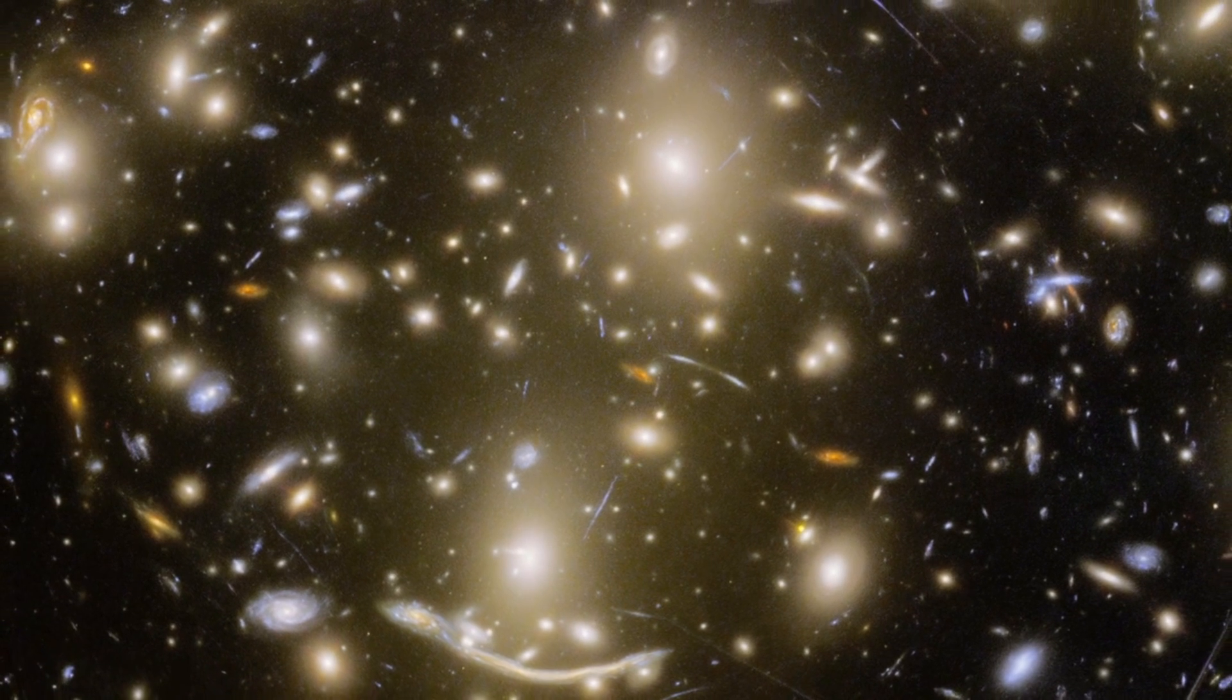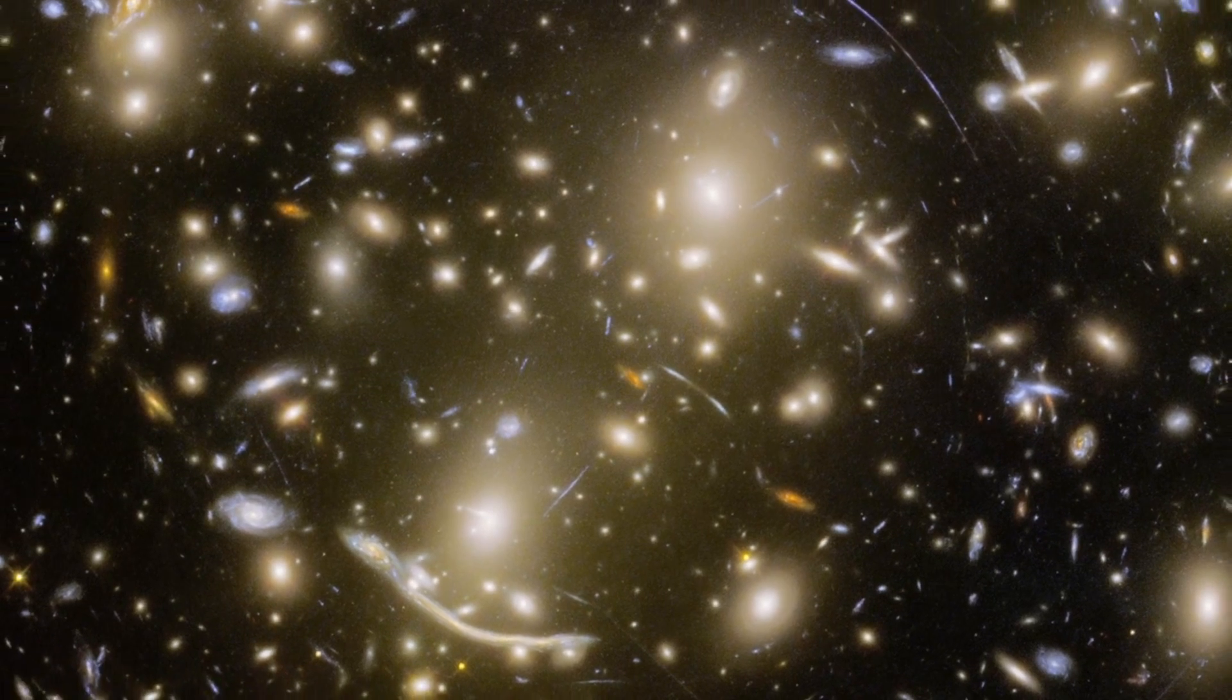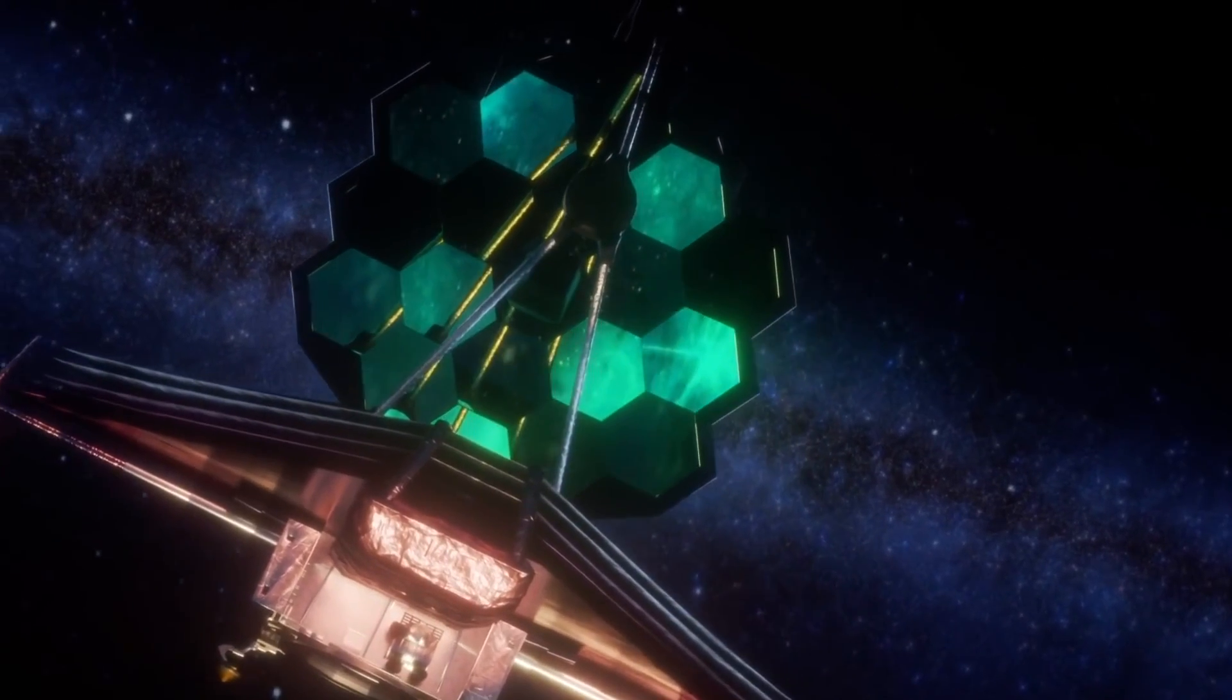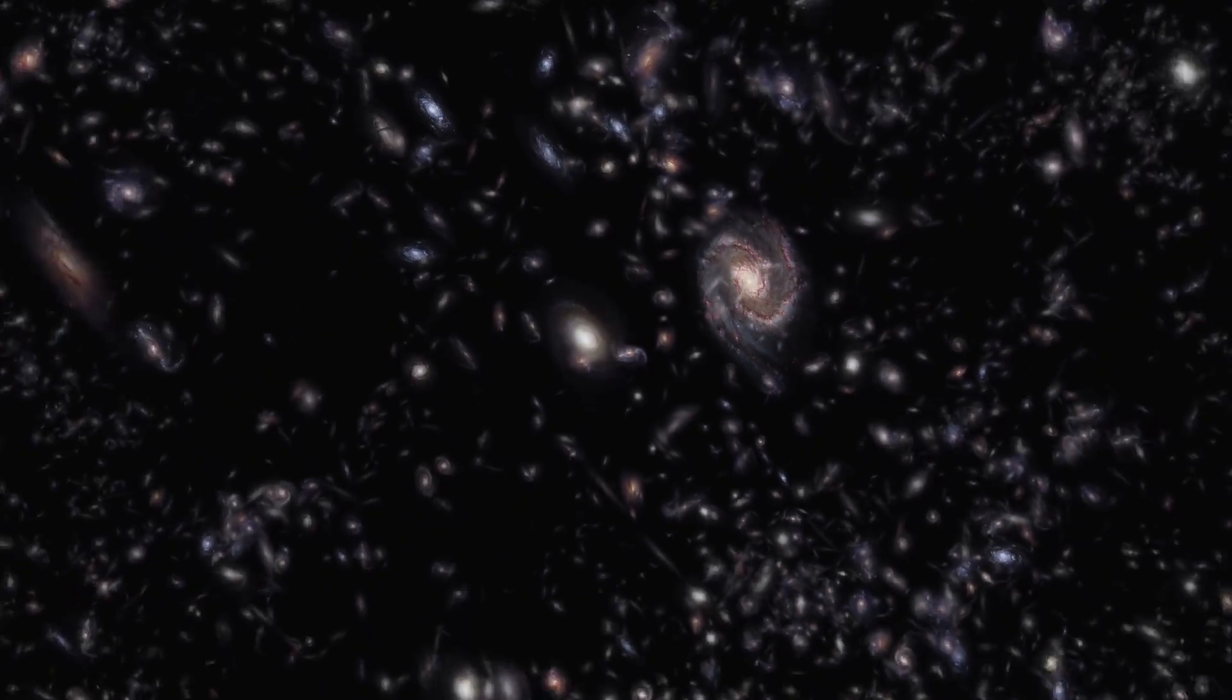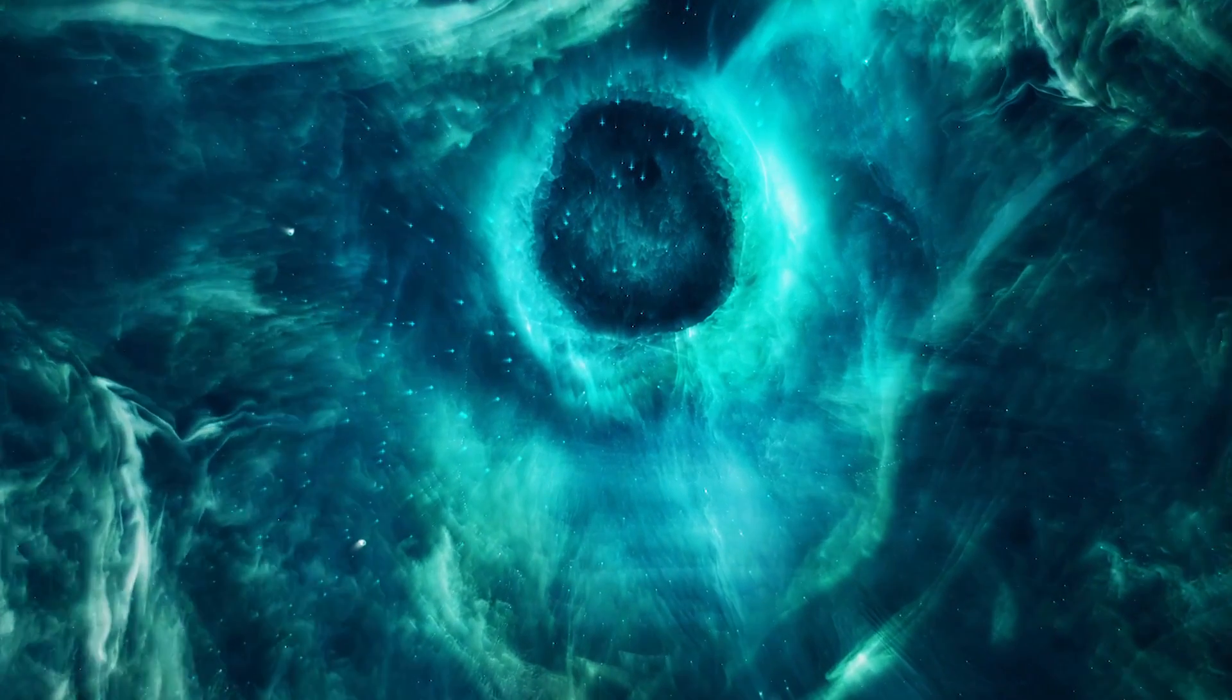Scientists are still puzzling over whether these are two galaxies or two clumps of stars within a galaxy, but they're banking on the JWST to provide the answers. The image has allowed astronomers to better understand how galaxies evolved in the early universe and has challenged everything we thought we knew about the cosmos.